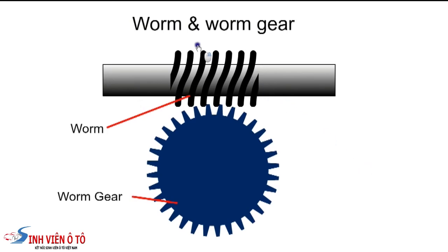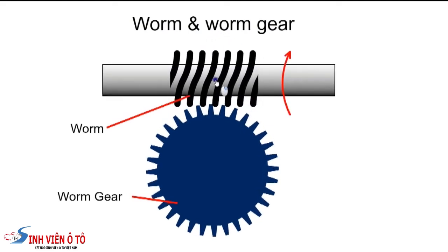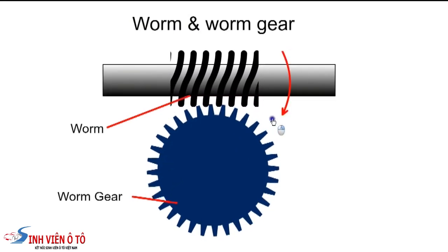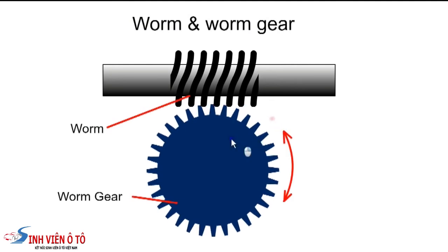The word Torsen is derived from torque sensing. The principle is based on a worm and worm gear. When the worm is rotated, it drives the worm gear, but the gear cannot drive the worm.